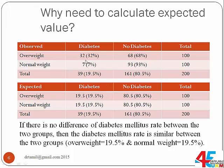In the real scenario shown in the observed table, the rate of diabetes mellitus among the overweight is 32%, while among the normal weight it is 7%. If there is no difference between the two groups, we expect their rate to be the same — based on the total percentage at the bottom, which is 19.5%. So if there is no difference, both groups would also be at 19.5%.